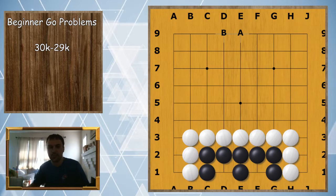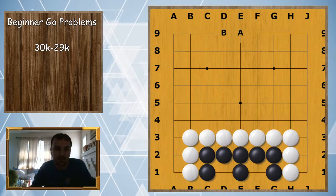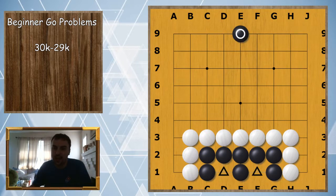Is black alive or dead? In this case black is still alive because it's still two eyes, even though it looks a little bit different. Eyes can look a little different on the edge. The idea is that white cannot play here because it'll have zero liberties, so this is alive because it has two eyes.